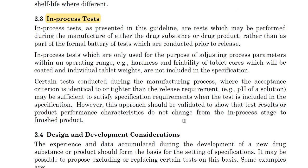Certain tests conducted during the manufacturing process where the acceptance criteria are identical to the release requirements — for example, pH of a solution — may be sufficient to satisfy specification requirements when the test is included in the specification. However, this approach should be validated to show that the test results and performance characteristics of the product do not change from its in-process test to the finished product.